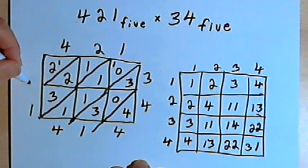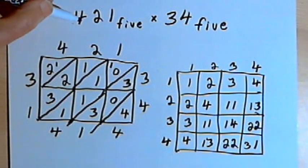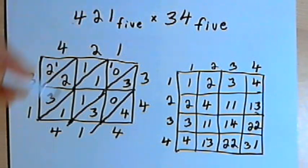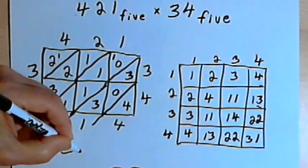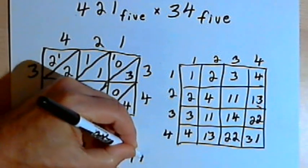And then 2 plus 1 is 3. So the answer to this multiplication problem, 421 base 5 times 34 base 5 is going to be 31414 base 5.